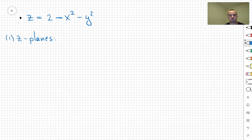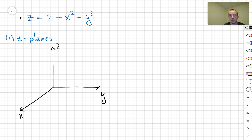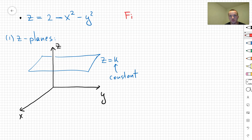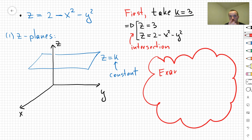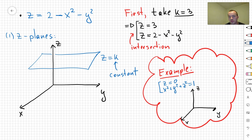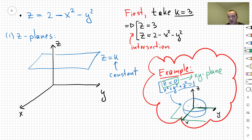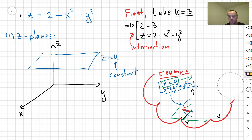Let's take one of the most important examples: z = 2 - x² - y². Let's visualize this surface by considering z-sections — planes z = k. If k = 3, we get x² + y² = -1, which has no solution, so the intersection is empty. Replacing 3 with k gives x² + y² = 2 - k.